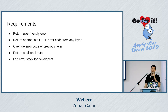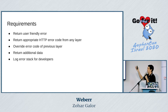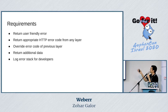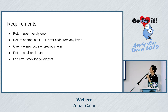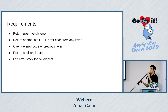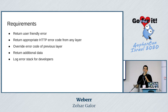What we would like from an error handling package is to be able to return a user-friendly error message for the user, which is separate from the error that I would also like to log for developers. We'd like to attach an appropriate HTTP code from any layer — here, a 404 not found would be suitable. Sometimes we'd like to override an error code set by a previous layer. We'd also like to add some additional data to the error, and log a stack trace for the developer who might debug the code.